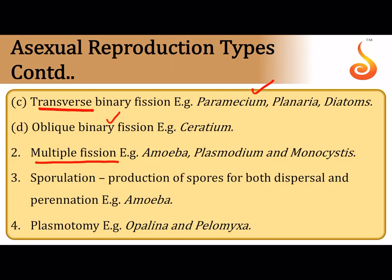In multiple fission, one cell gives rise to more than two daughter cells, as in amoeba, plasmodium, and monocystis. During unfavorable conditions, amoeba exhibits sporulation — it develops a three-layered cyst wall, following which it produces pseudopodiospores which start living an independent life. Plasmotomy involves free nuclear divisions followed by cytoplasm division, as in opalina and pilomyxa.